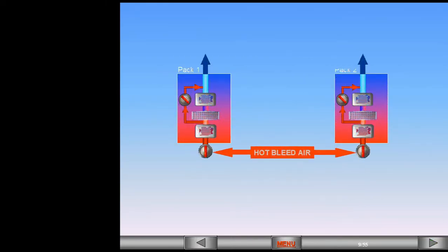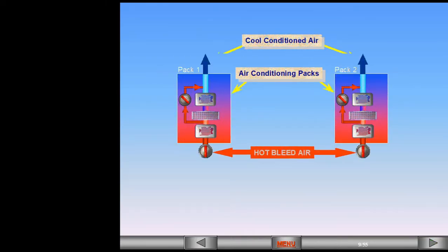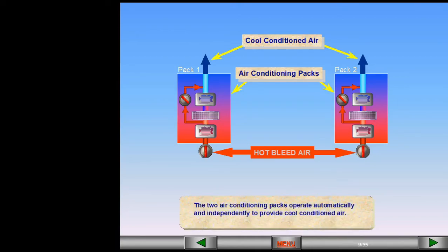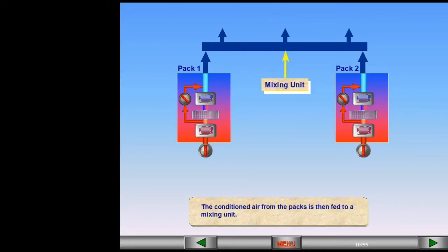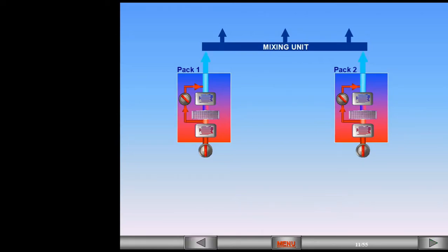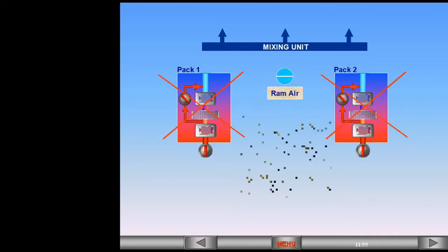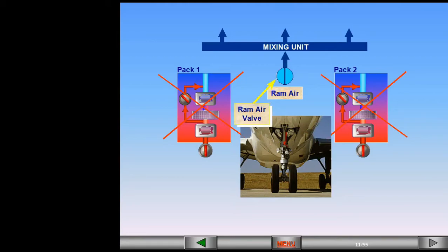The two air conditioning packs operate automatically and independently to provide cool conditioned air. The conditioned air from the packs is then fed to a mixing unit. In case of failure of both packs, RAM air is provided via a RAM air valve. We will look at the use of RAM air in the abnormal operation module.